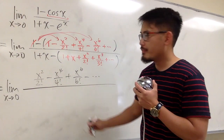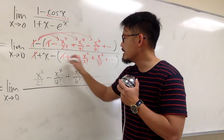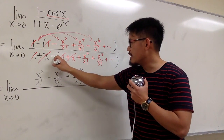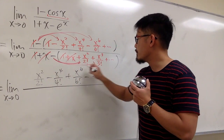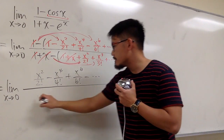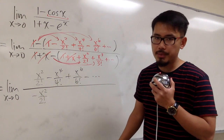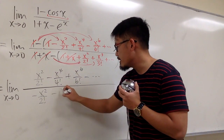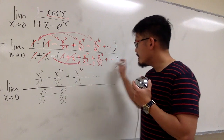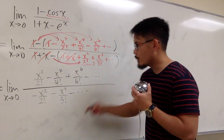For the denominator, 1 minus 1 cancels out, and x minus x also cancels out. Then distributing the minus into the parentheses gives us minus x squared over 2 factorial to begin with, then minus x to the third power over 3 factorial, and then minus whatever comes after that.